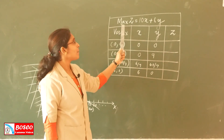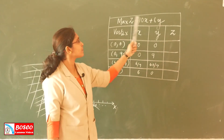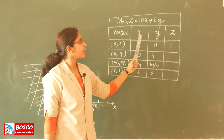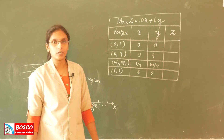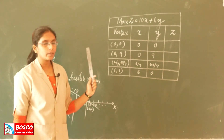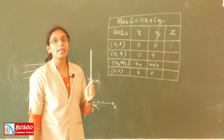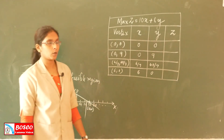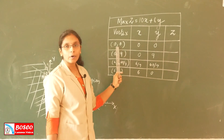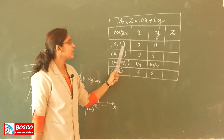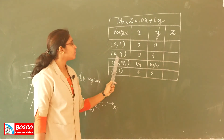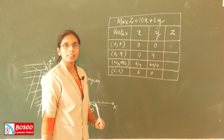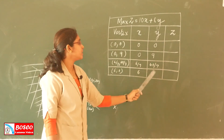The objective function is Z equals 10X plus 6Y. We construct a table with four vertices. The vertices and their coordinates are: (0, 0), (0, 9), (6/7, 60/7), and (6, 0). We record the X-coordinate and Y-coordinate for each vertex.